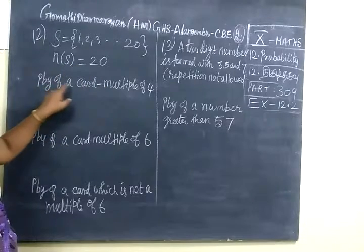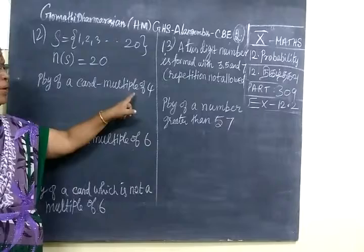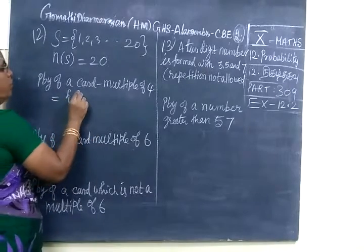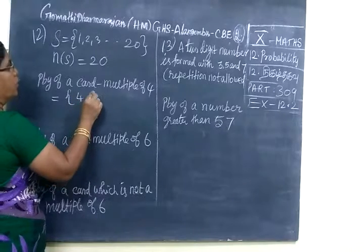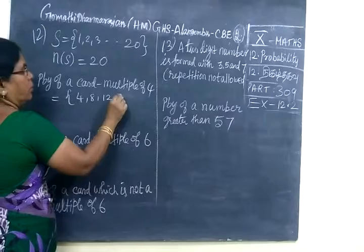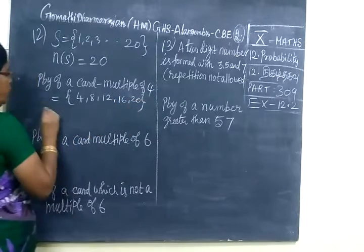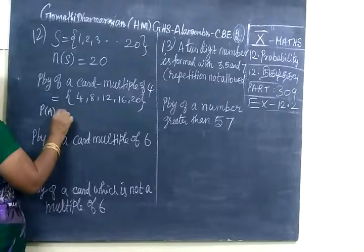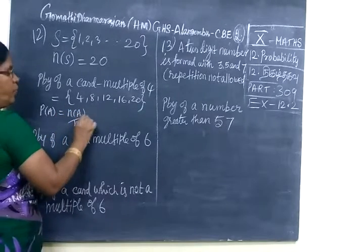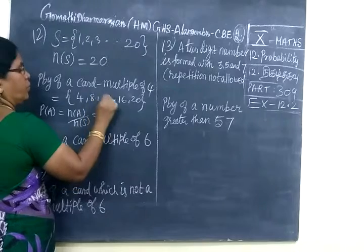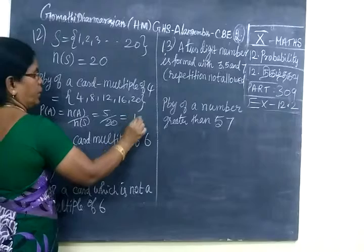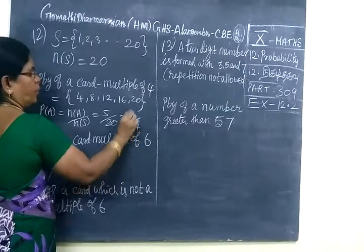We want to find probability of a card which is a multiple of 4. So multiples of 4 are 4, 8, 12, 16, 20. So P(A) equals N(A) by N(S) equals 1, 2, 3, 4, 5. So 5 by total number 20. So answer is 1 by 4.